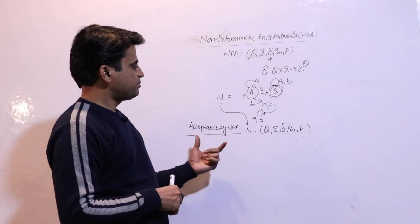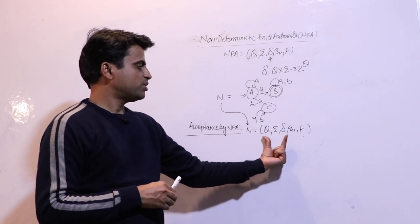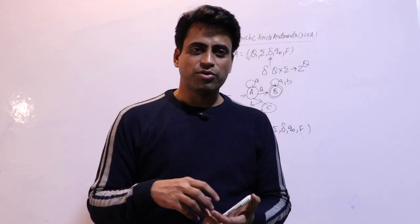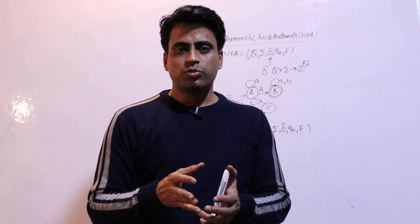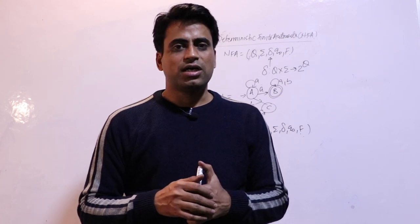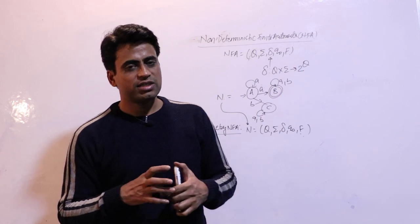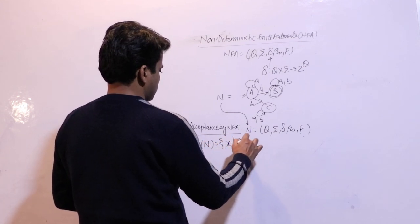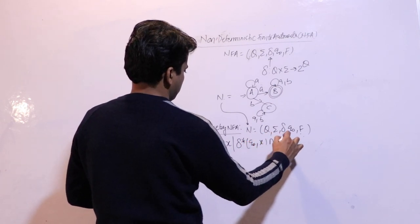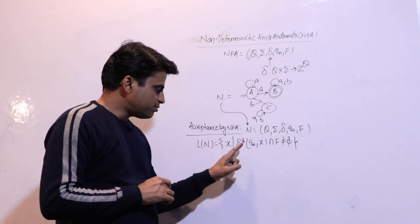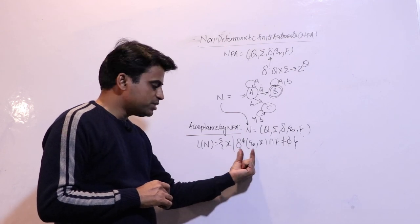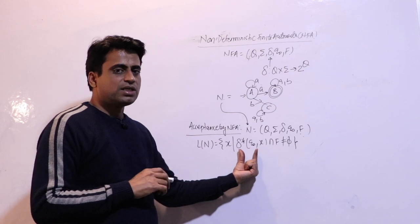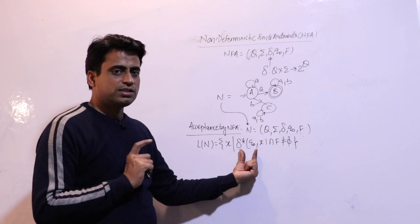Representation of NFA has two methods: transition graph and transition table. Now, acceptance by NFA — given an NFA with Q, sigma, delta, q-naught, and F — a string x is accepted by NFA N if, after applying the input string from the initial state and reading the last character, many states can appear in the output. If even one of those many states is a final state, then the input is accepted; otherwise it is rejected.